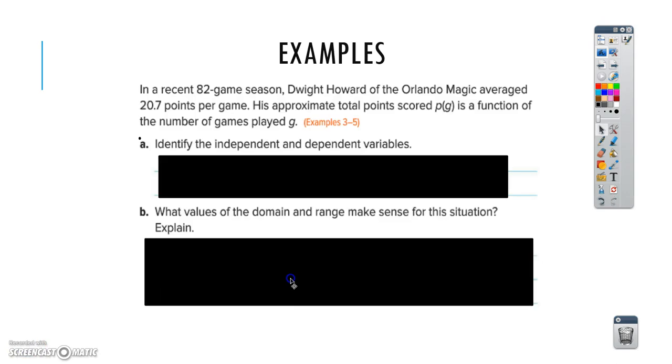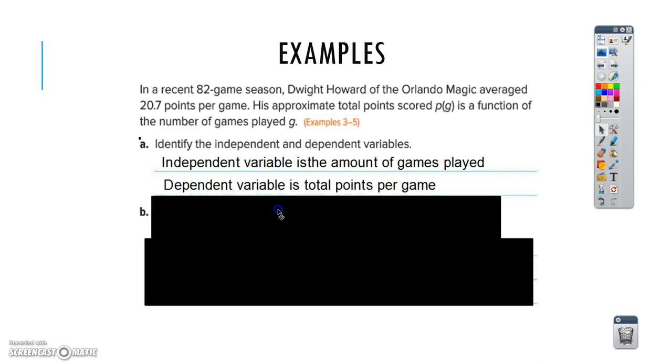For the third example, it says, In a recent 82-game season, Dwight Howard of the Orlando Magic averaged 20.7 points per game. His approximate total points scored, which would be the function PG, is a function of the number of games played, which is G. So, identify the independent and dependent variables. You can go back and look at the definitions of the independent and dependent variables if you need to. So, an independent variable is the amount of games played, and the dependent variable is the total points per game.